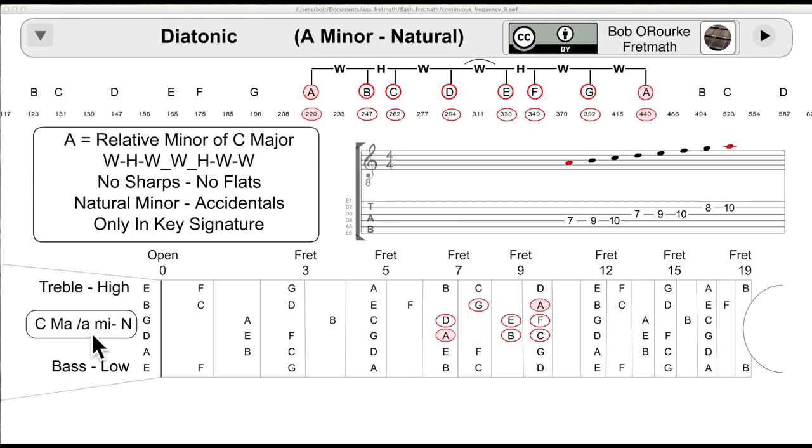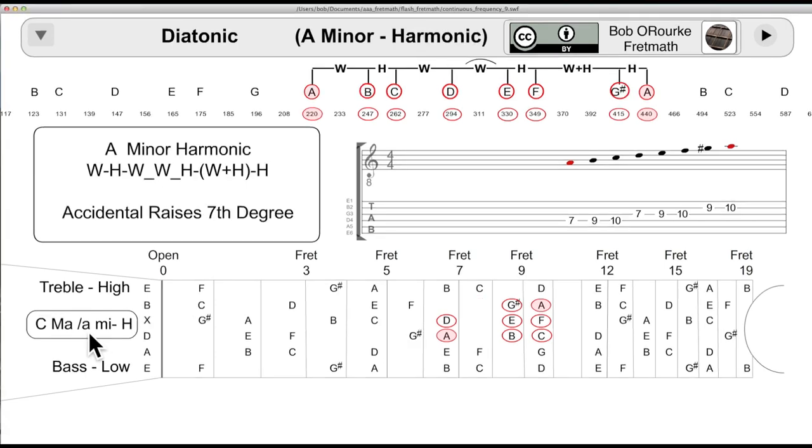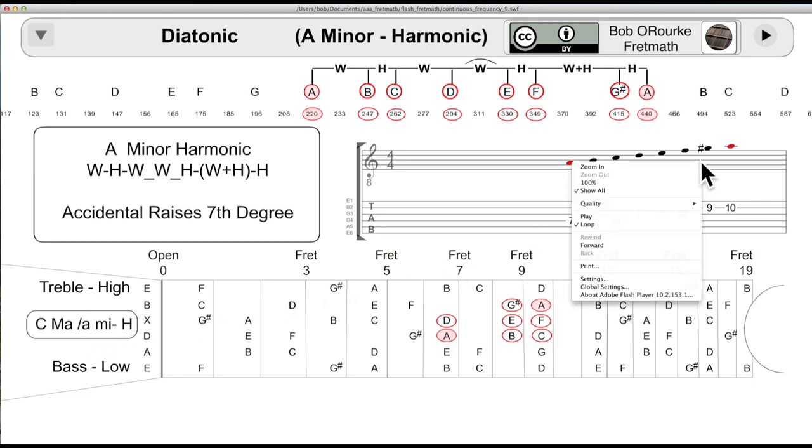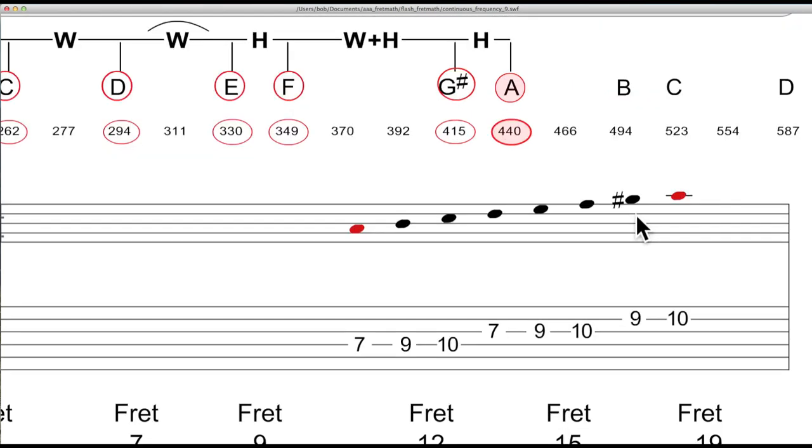The natural minor is formed from the key signature alone and ends with a half step, whole step, whole step. Harmonic form has a raised seventh, or that is, in addition to the key signature, it has an accidental applied to the notation on the seventh note. So it ends with a half step, whole plus half step, and a half step. For the A minor, the G becomes a G sharp.